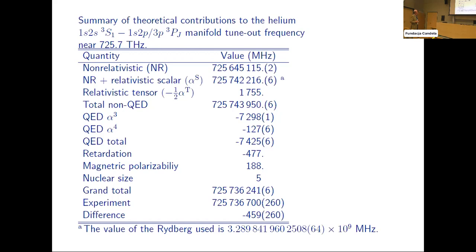So it's necessary, I think, to do further work on this on both the experimental and the theoretical side, because after all, this retardation correction is minus 477, and the difference is 459. So one wonders whether there might be something that requires further work here.